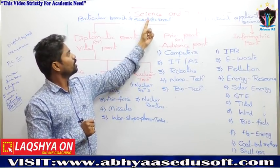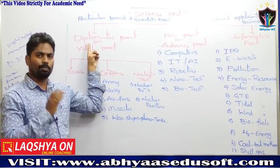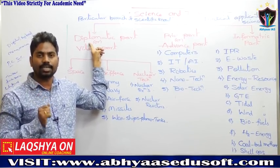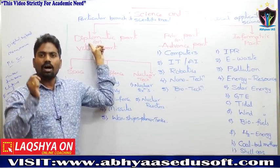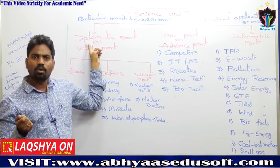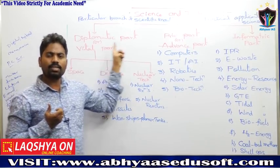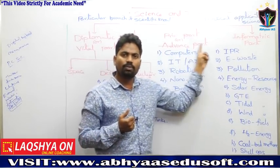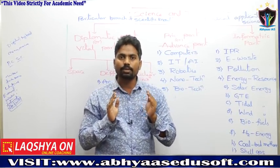We can classify science and technology into three parts. One is the diplomatic part — another name is strategic part, another name is vital part, which is the most important part. The second one is the advanced part, covering technical terms and advanced topics.